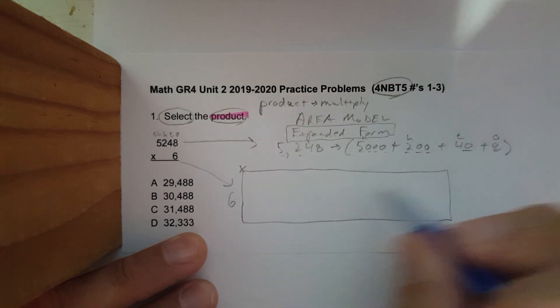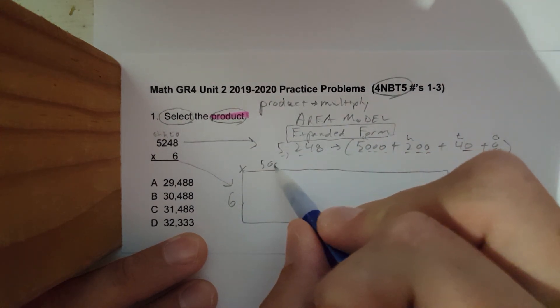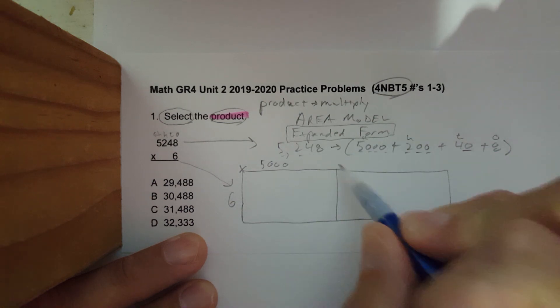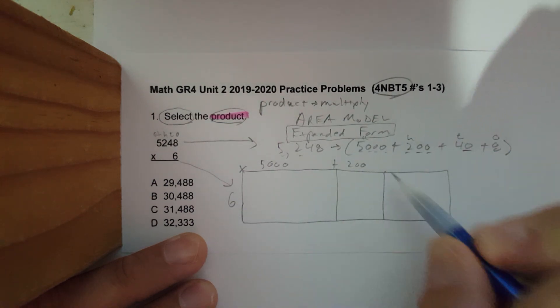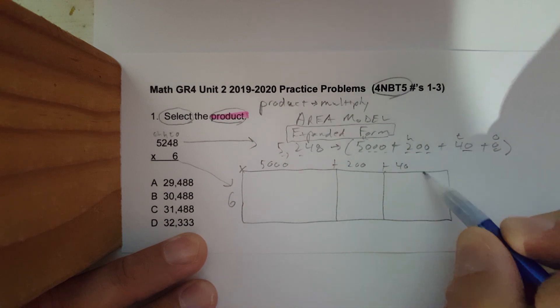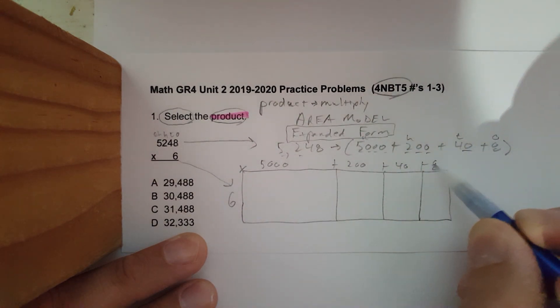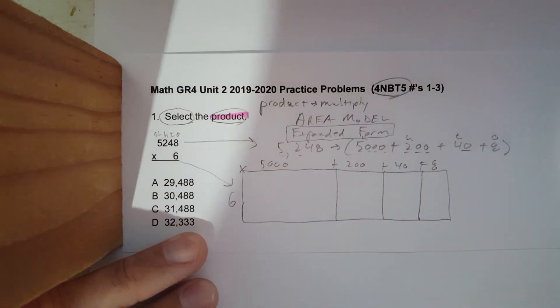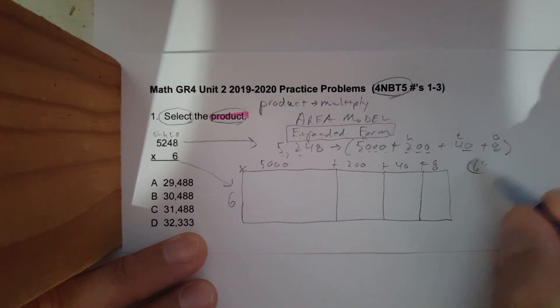Now we're going to write the thousands first, plus the hundreds, plus tens, plus eight. Now if you don't know your multiples of six, we will write them out.